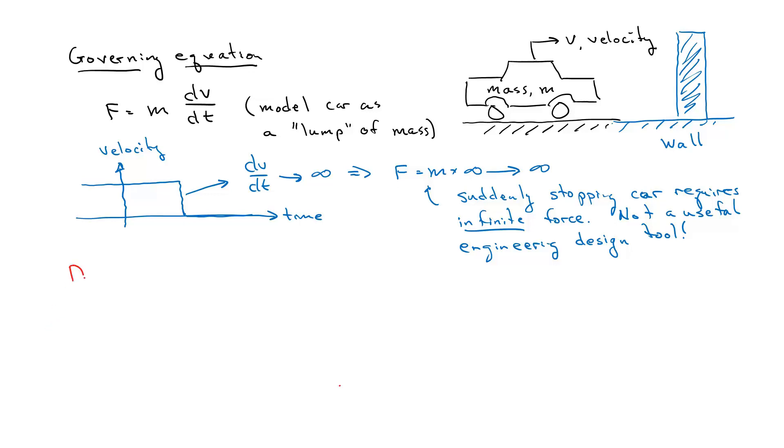It's probably more realistic to use what is called a distributed parameters model. In this case, with the distributed parameters model, we don't need to assign the entire car a single velocity. Different parts of the car can be going at different speeds. So my car, for example, can have a different velocity at the front, V1, than it does at the back, V2.